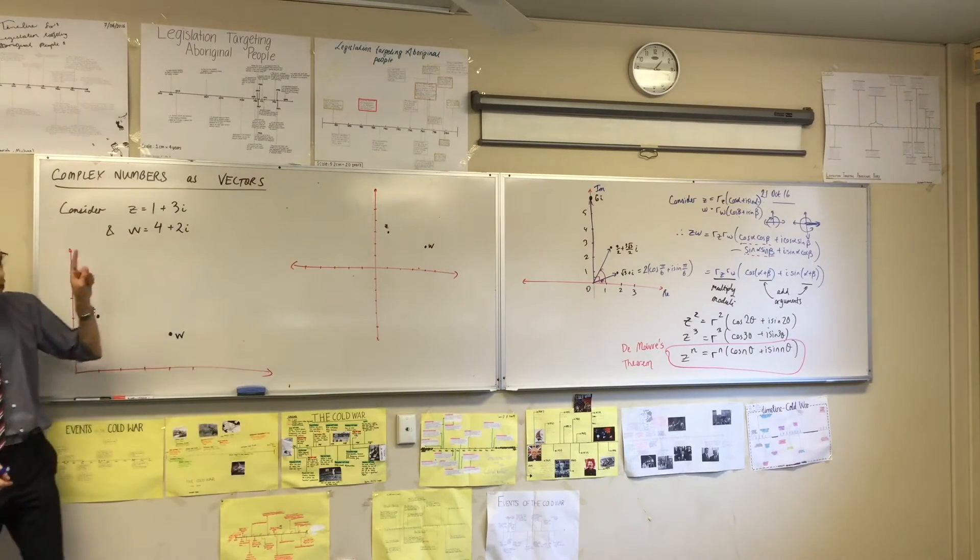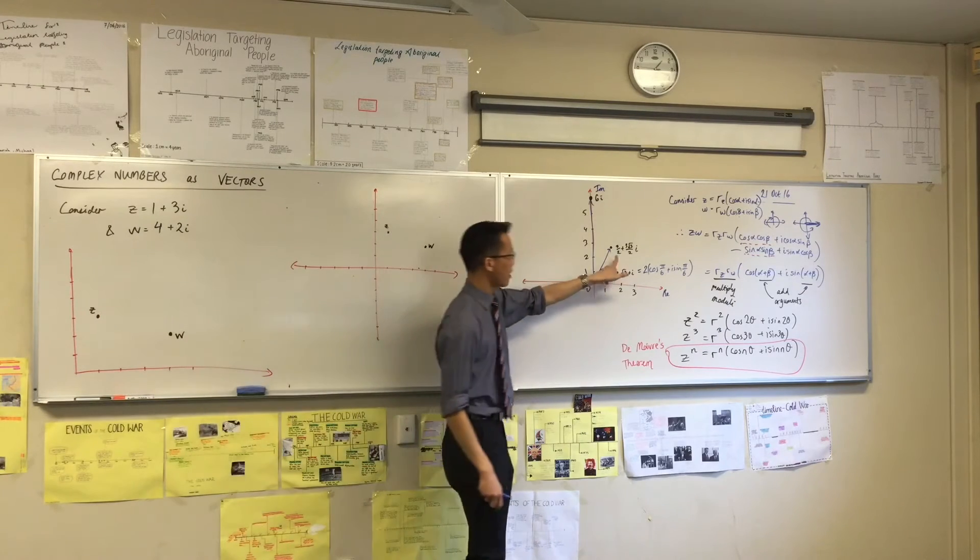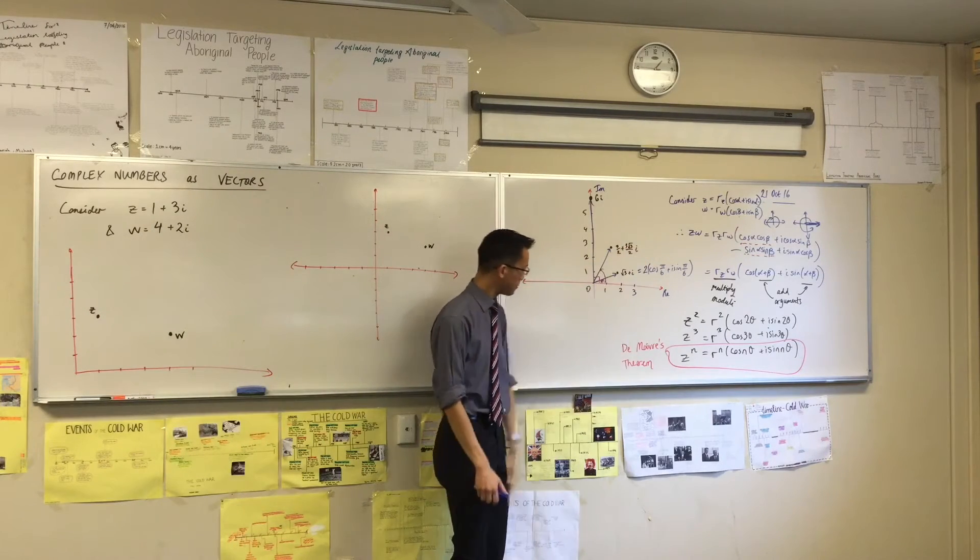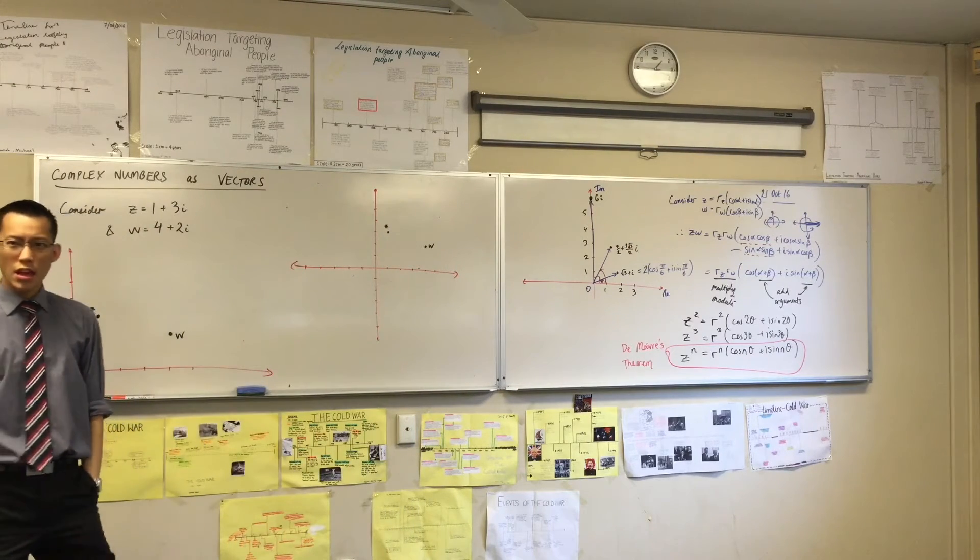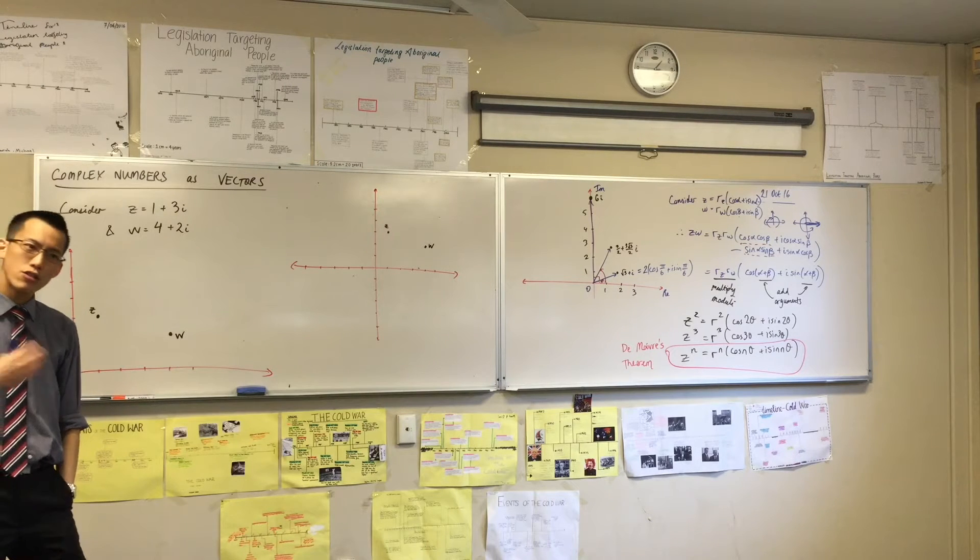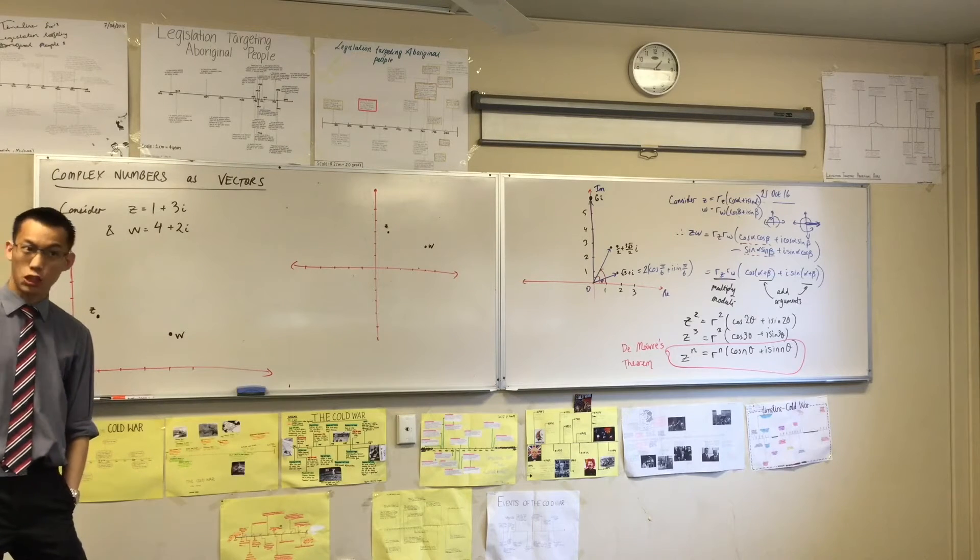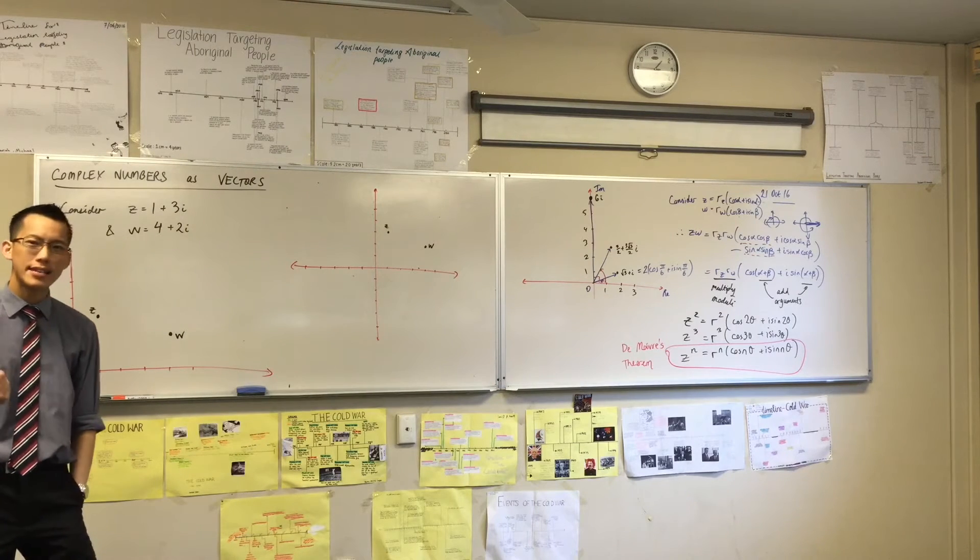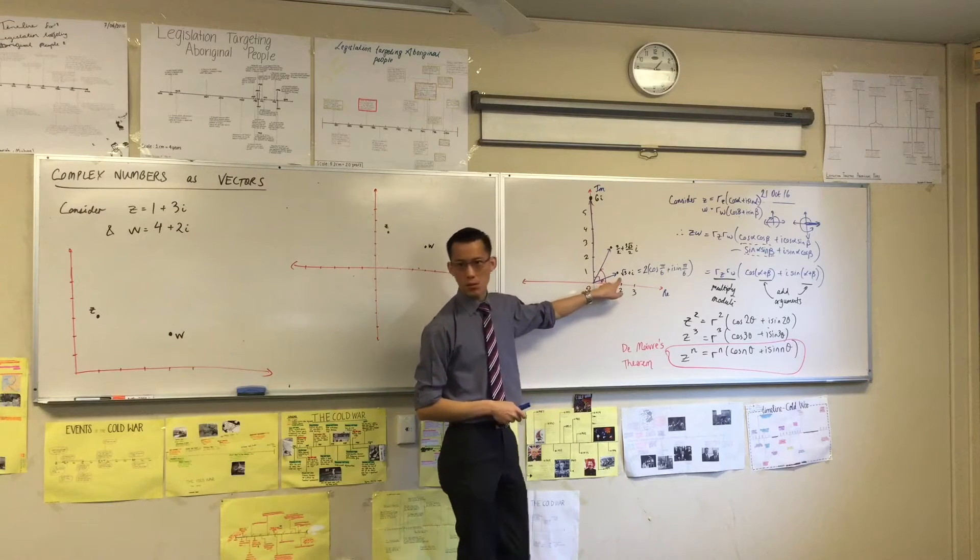Now before I get to this, just look at that diagram we had before which had root of 3 plus i. I'll ask you a quick question. If I've got z there as root 3 plus i, can you tell me where is z bar, the conjugate of z, where is it in relation to z? This is where z is. Where is z bar?